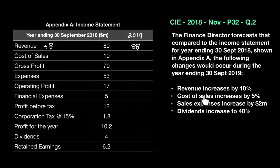Cost of sales increased by 5%. It was 10, so 5% of 10 is 0.5, making the new cost of sales 10.5. Now I can solve the gross profit: revenue minus cost of sales. That gives us 88 minus 10.5, which becomes 77.5.